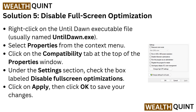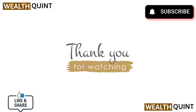Solution 5: Disable Fullscreen Optimization. Right-click on the Until Dawn executable file, usually named UntilDown.exe. Select Properties from the context menu, then click on the Compatibility tab at the top of the Properties window. Under the Settings section, check the box labeled Disable Fullscreen Optimization. Click Apply, then click OK to save your changes.